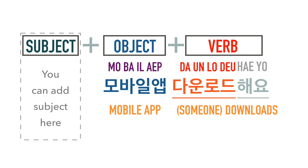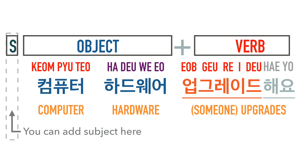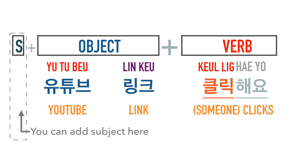Now we're going to see some examples of compound nouns — two nouns back to back, which may be attached together or sometimes separated, normally as arranged in English, though the rules aren't always observed. 모바일 앱 다운로드해요. 모바일 앱 다운로드해요. 안티바이러스 소프트웨어 인스톨해요. 안티바이러스 소프트웨어 인스톨해요. 컴퓨터 하드웨어 업그레이드해요. 컴퓨터 하드웨어 업그레이드해요. 인터넷 아이콘 클릭해요. 인터넷 아이콘 클릭해요. 유튜브 링크 클릭해요. 유튜브 링크 클릭해요.